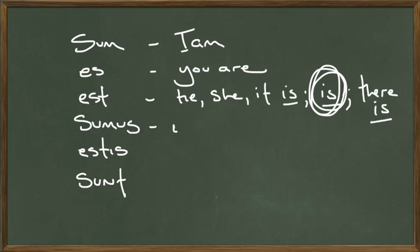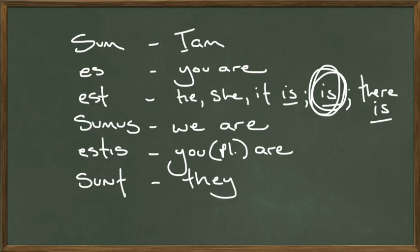Sumus means we are. Estis means you, but this time it's plural, are. And sunt means they are.